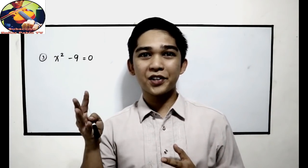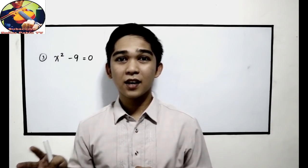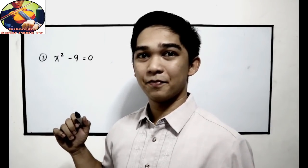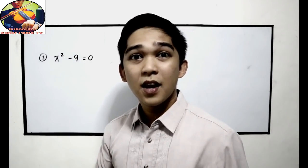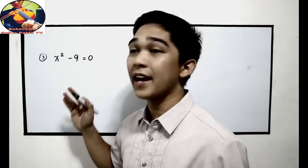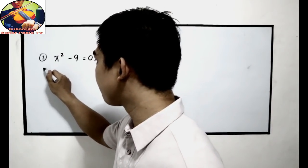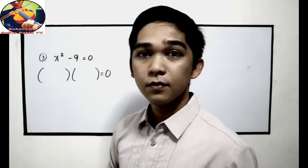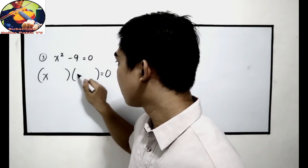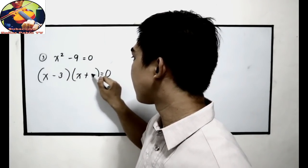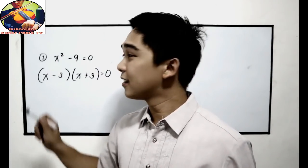Now let's have solving quadratic equations by factoring using the difference of two squares. Take note that our given must be perfect squares. Example number 3: x squared minus 9 is equal to 0. x squared is a perfect square, and 9 is also a perfect square, so we can apply the difference of two squares. The factors are x and x for x squared, and negative 3 and positive 3 for negative 9, since negative 3 times 3 is negative 9.